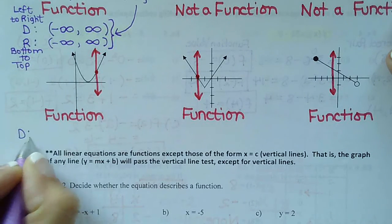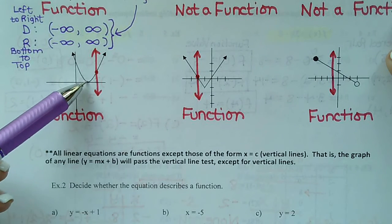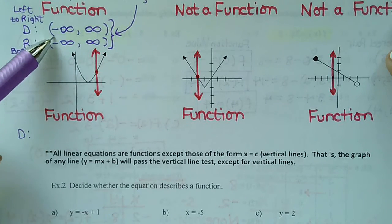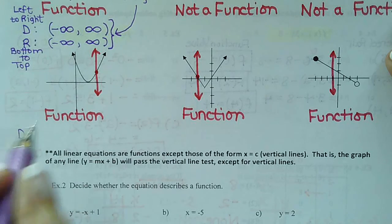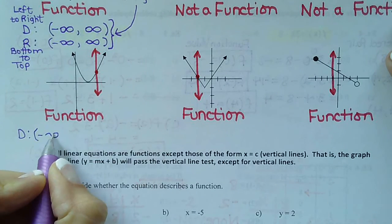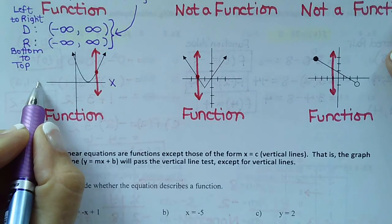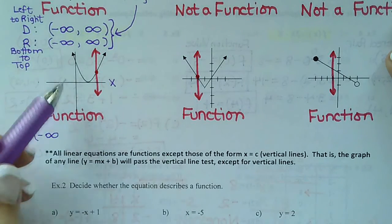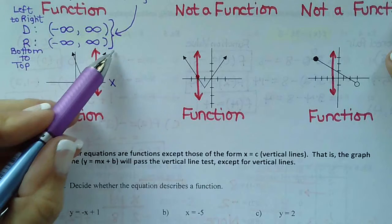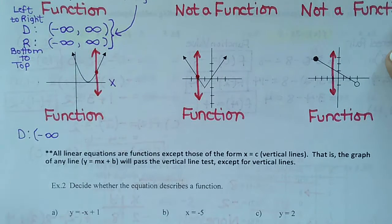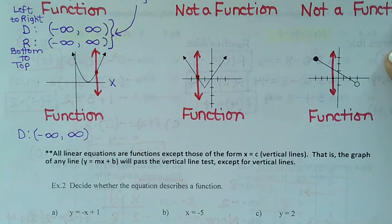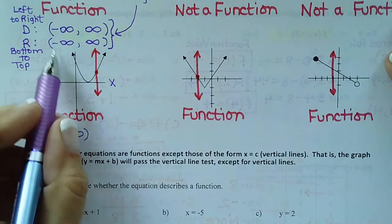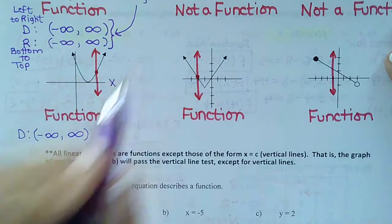Looking for the domain, I notice arrows. Doesn't that tell me that this parabola is going to go left forever? So left forever is negative infinity — this is the x-axis. And then I look on the other side and see it goes right forever too. So just like the line, its domain is also negative infinity to positive infinity, because the arrows tell us it goes left forever and right forever.